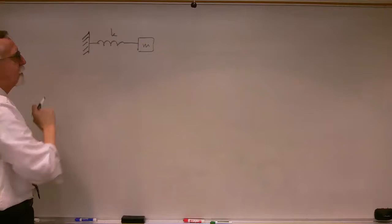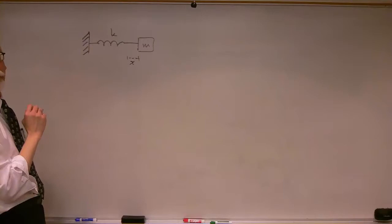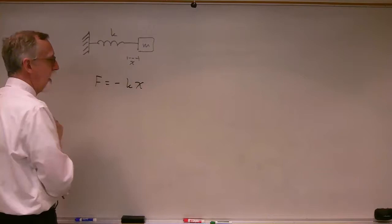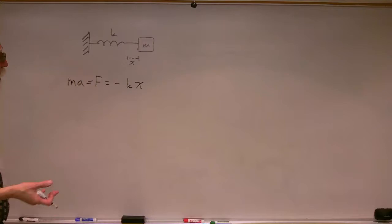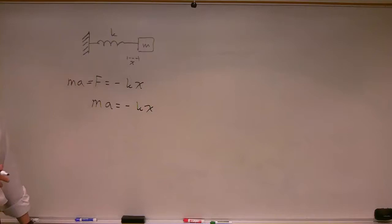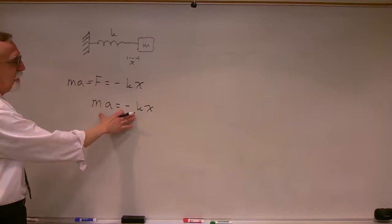Let's imagine we've got a mass m attached to a spring with spring constant k. We know that the force acting on the mass m, if it is displaced a distance x from equilibrium, is equal to minus kx. If that's the only force acting on the mass, we know that the force must equal mass times acceleration. So we have mA equals minus kx. This is the equation of motion for the mass on a spring: mass times acceleration equals minus k times displacement.